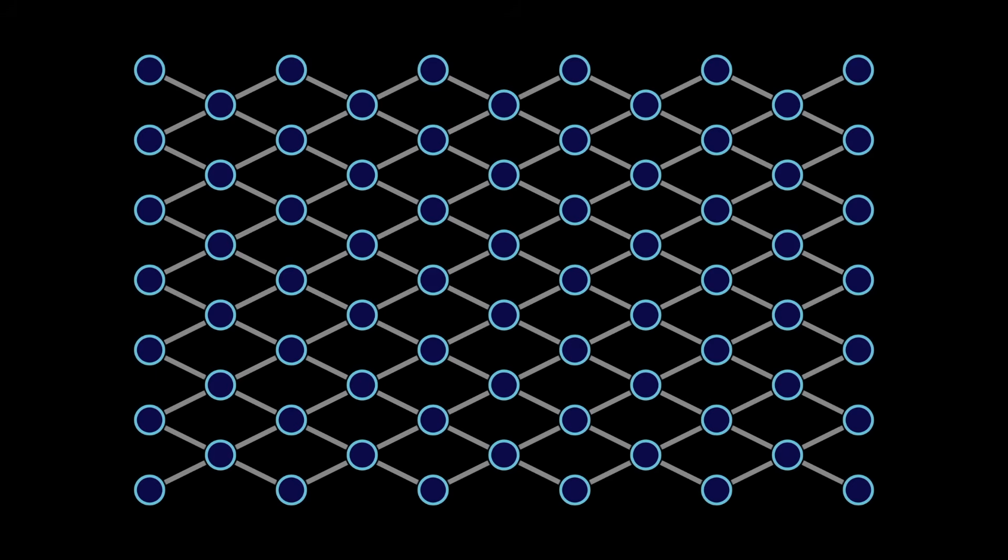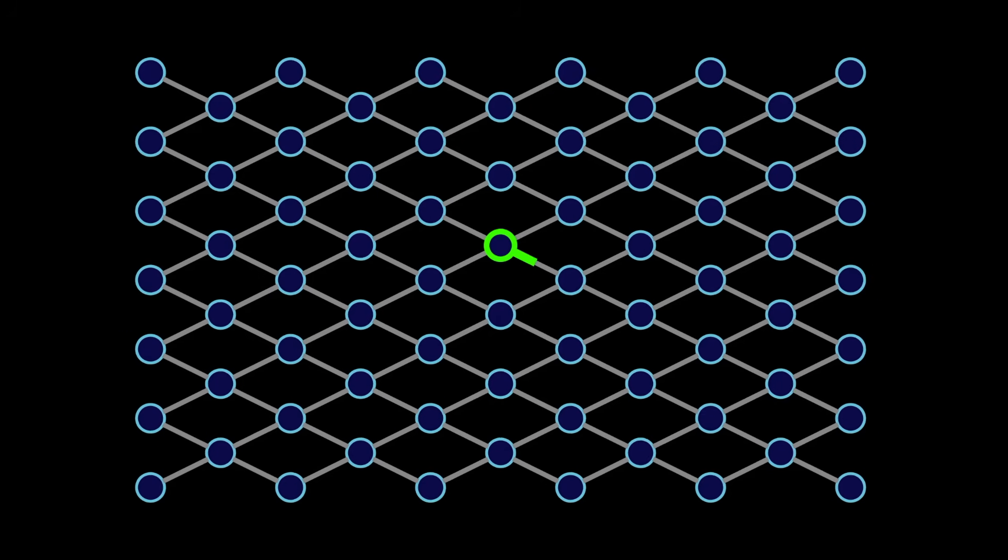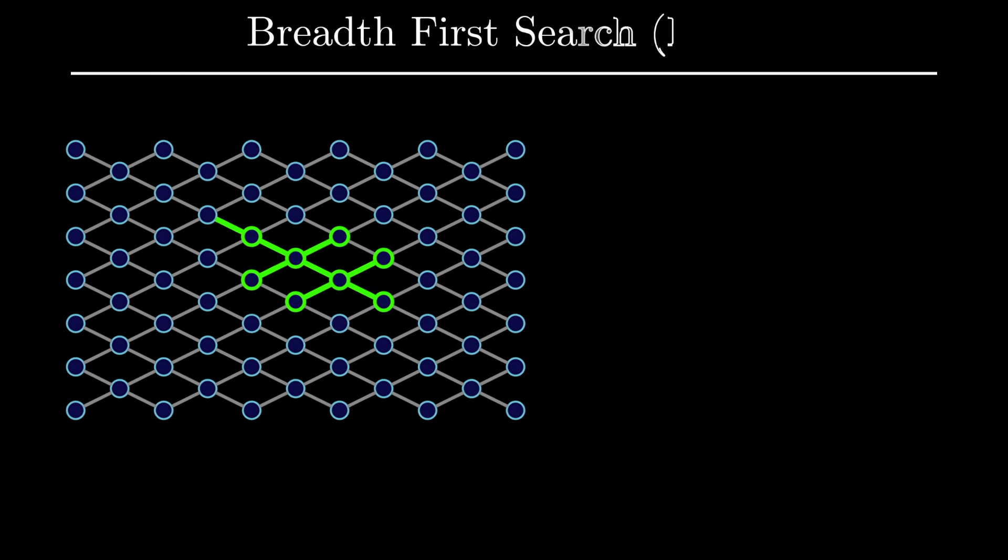Today I want to go over another key search algorithm in graph theory, breadth first search or BFS. Suppose you were given a graph with a starting vertex and asked to find the shortest path from that vertex to every other vertex in the graph. The BFS algorithm allows you to answer this question.